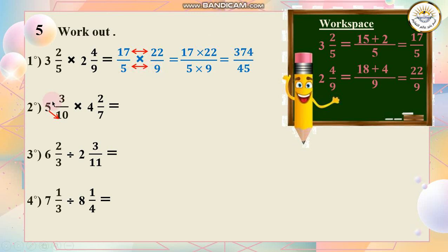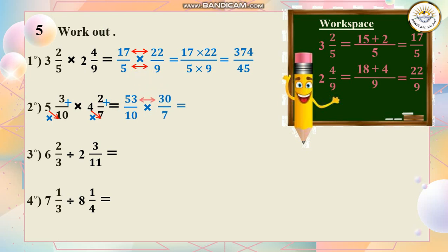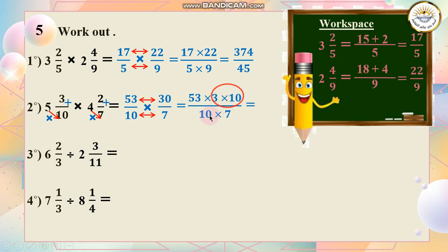Now I calculate the second one: 5 and 3 over 10 times 4 and 2 over 7. 5 times 10 is 50, plus 3 gives 53 over 10. Then 4 times 7 is 28, plus 2 is 30 over 7. I multiply the numerators and denominators together. I can write 30 as 3 times 10 and simplify by 10. The answer is 159 over 7.